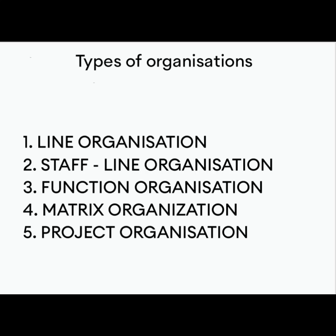So there are five types of organization. First is line. Second is staff line. Third is function. Fourth is matrix. And fifth is project.